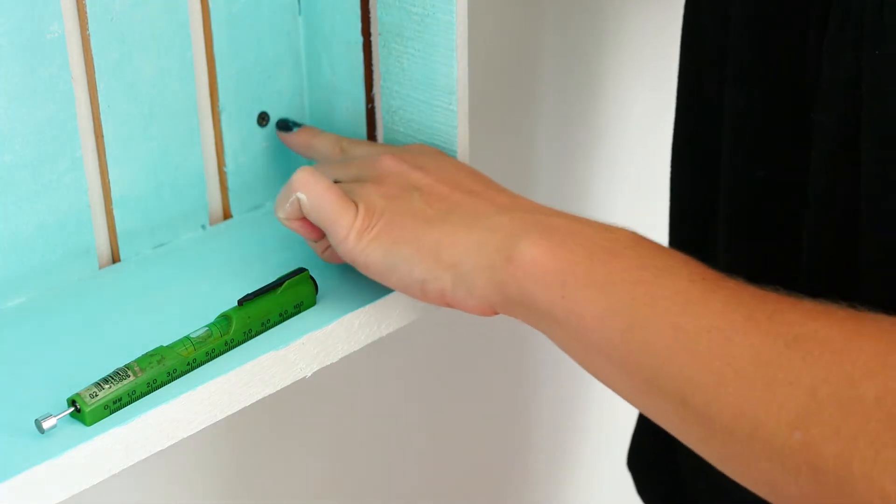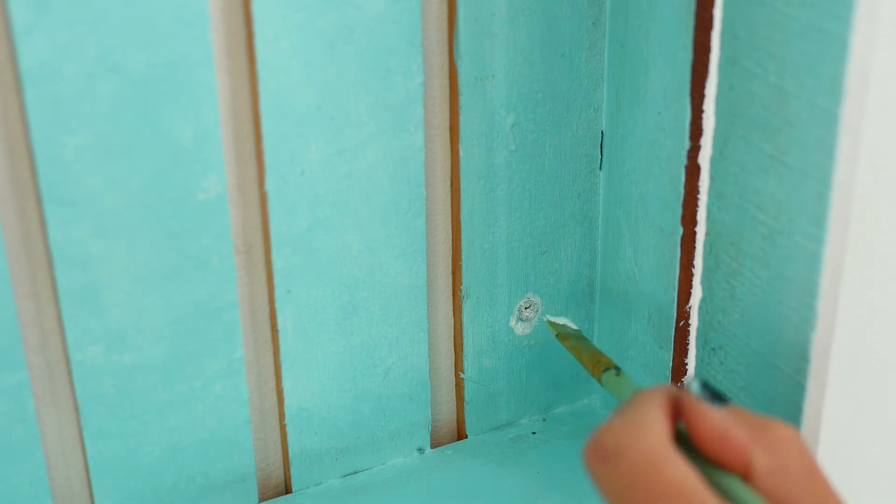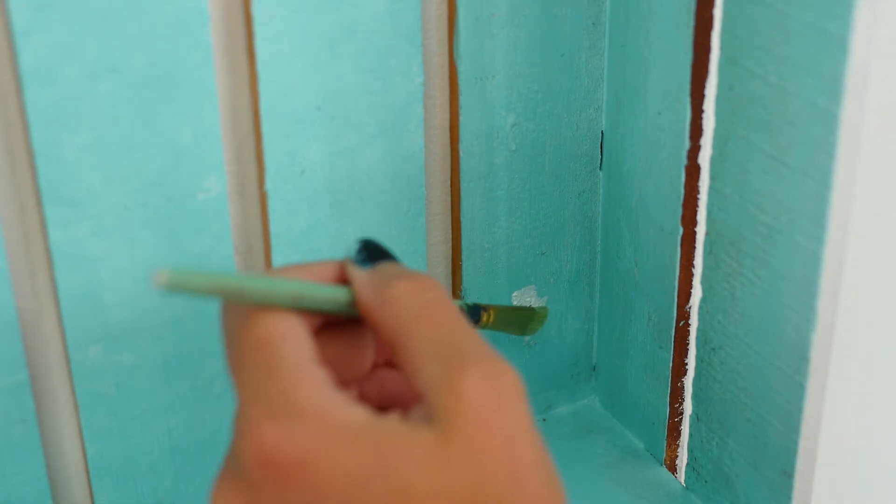Next, let's cover up these screw heads. I start by using white paint first, and then come in with the matching teal paint and blend outward.